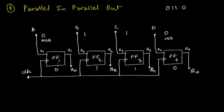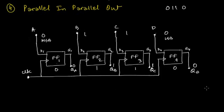This is how the data gets stored from flip-flops 1 through 4. As soon as the data gets stored in each flip-flop, it is just correspondingly available almost instantaneously on its output lines QA through QD. QA contains bit 0, QB contains bit 1, QC contains 1, and QD contains bit 0. As soon as you connect your wires to the output lines, you'll have your data available as a parallel output.